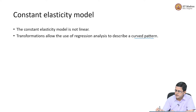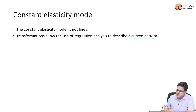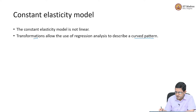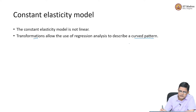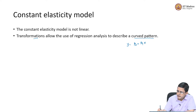The relationship is clearly not linear. So what kind of transformations do we mean? A simple linear regression model is of this type: y is equal to beta 0 plus beta 1 x plus epsilon.